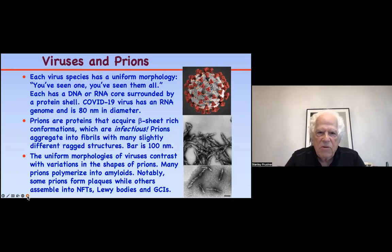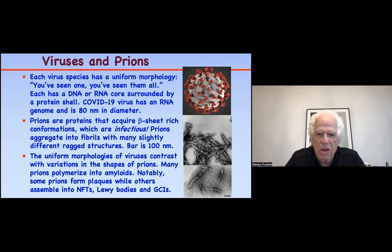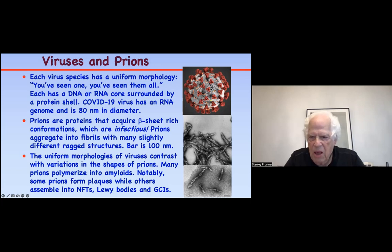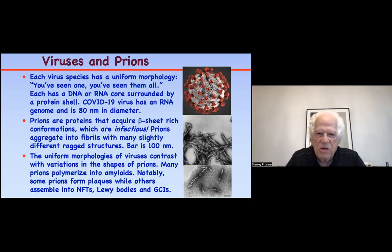Let's contrast viruses and prions. At the top is the coronavirus, and in the middle and bottom panels are prions. Prions are these fibrils — they are aggregates that form amyloids. No two of these are alike; each one is slightly different, and they tend to grow out in one place and then another. They're fragmented but they're all infectious. This is very different from viruses: if you've seen one coronavirus, you've seen them all.